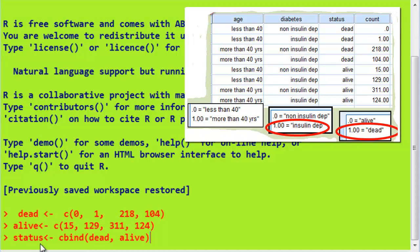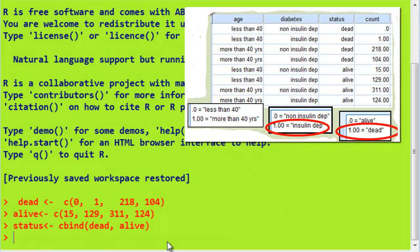There we are. We say status, which is the dependent variable, is equal to those two vectors. So now we have the dependent variable.